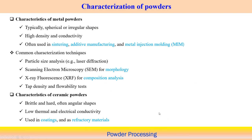For characteristics of metallic powders: the typical behavior is usually spherical or irregular shapes, very high density, and very high conductivity. Metallic powders are most often used in sintering operations, additive manufacturing, and metal injection molding.